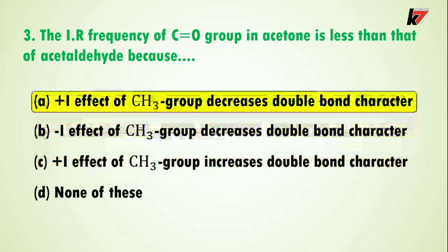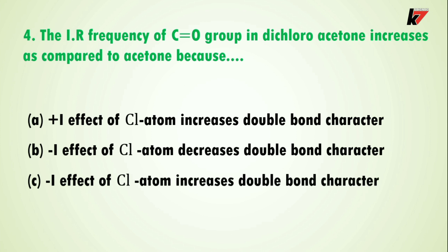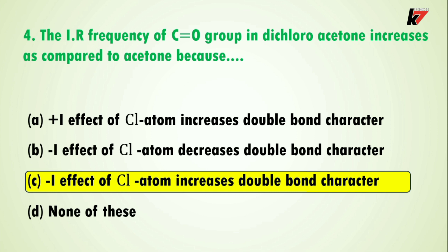Question 4: the IR frequency of the carbonyl group in dichloroacetone increases as compared to acetone. The correct answer is option C: the minus I effect of the chlorine atom increases double bond character. In dichloroacetone there are two chlorine atoms, and chlorine is an electron-withdrawing group. Its minus I effect increases the double bond character, resulting in a higher carbonyl IR frequency in dichloroacetone compared to acetone.